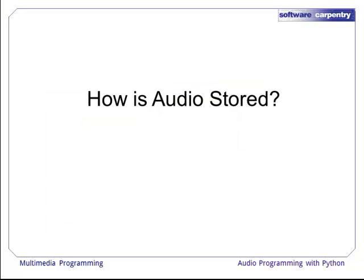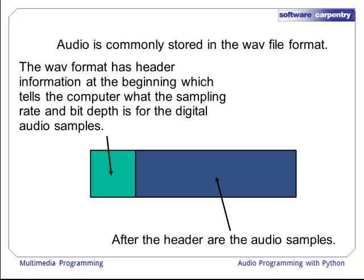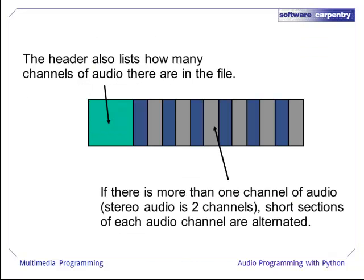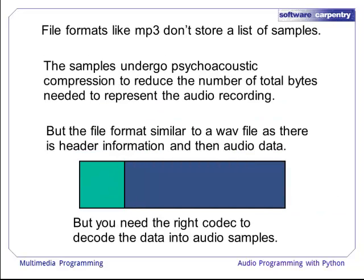So how are audio samples stored on a computer? Audio is commonly stored in the WAV file format. The WAV format has header information at the beginning, which tells the computer what the sampling rate and bit depth is for the digital audio samples. After the header are the audio samples themselves. The header also lists how many channels of audio there are. If there is more than one channel — for instance, stereo audio is two channels — short sections of each audio channel are alternated. File formats like MP3s don't store a list of samples; the samples undergo psychoacoustic compression to reduce the total bytes needed. The file format is similar to a WAV file, with header information at the beginning and then audio data.